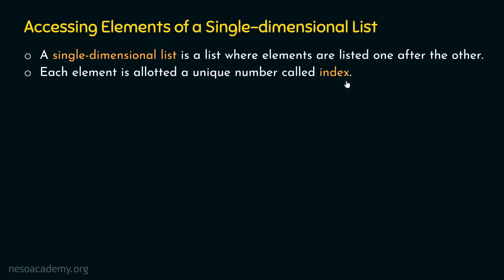If we are interested in accessing the entire list, we just need to specify the name of the list. But if we are interested in accessing a specific element, we need to access it through its index. Now, let's understand with the help of an example how a single dimensional list looks like.